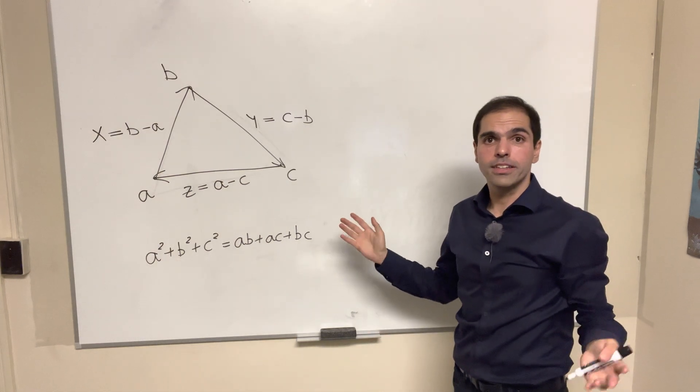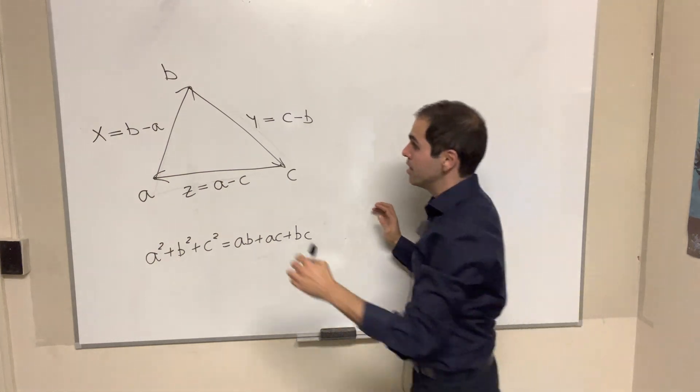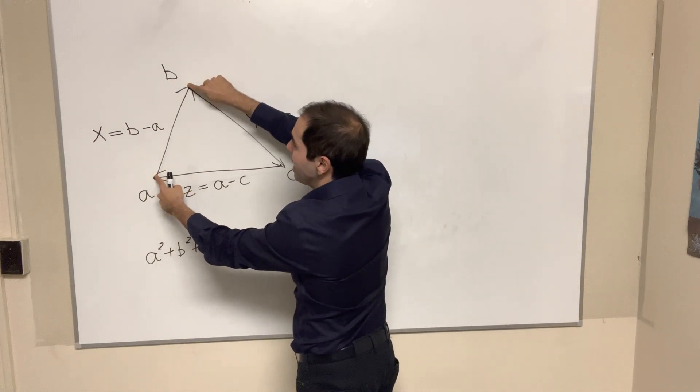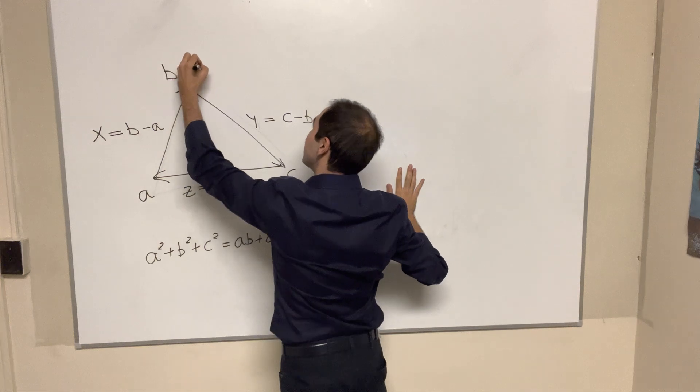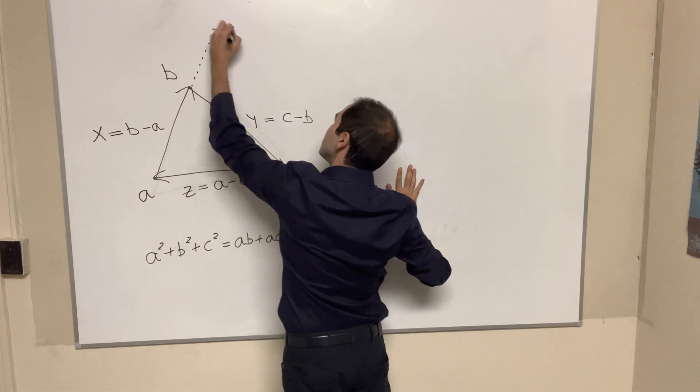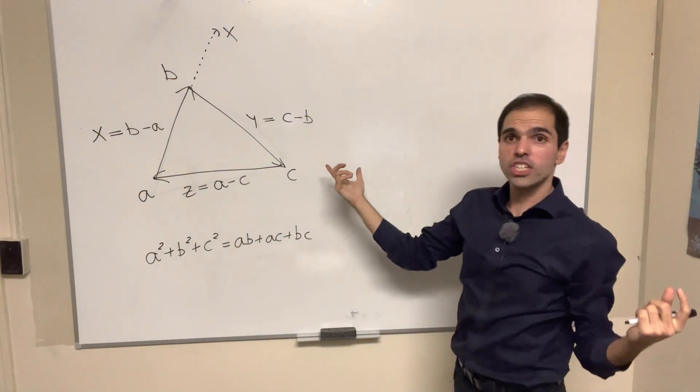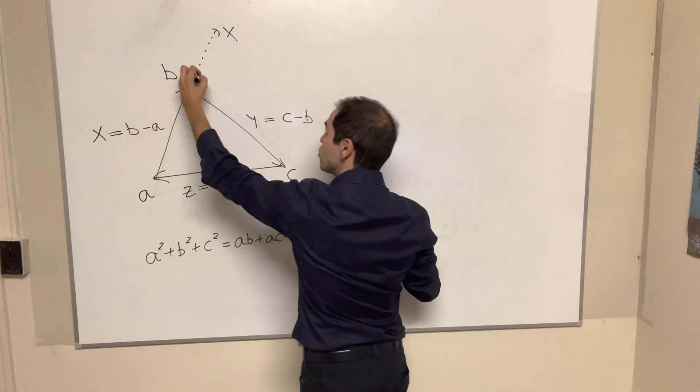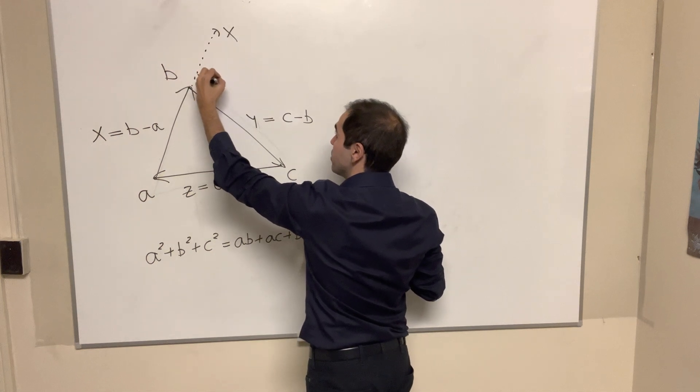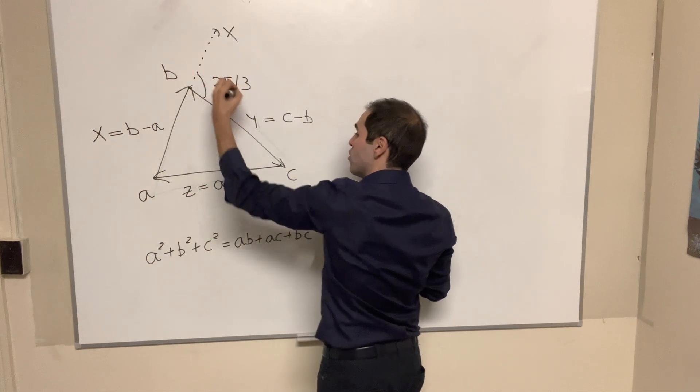And so the way to think about this is in terms of angles. Notice we have this side x. Well in terms of vectors it's the same thing as this side. And the question is, how do you go from y to x? Well, you just rotate by 120 degrees, 2π over 3.